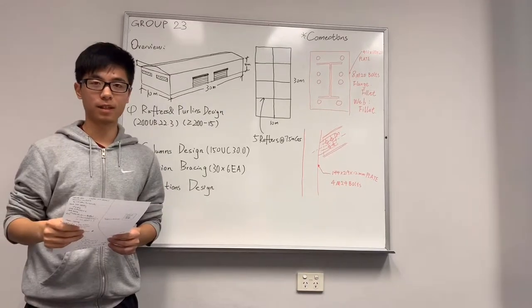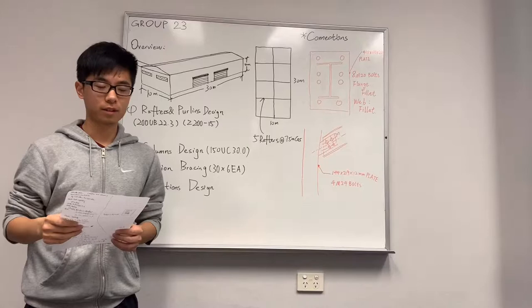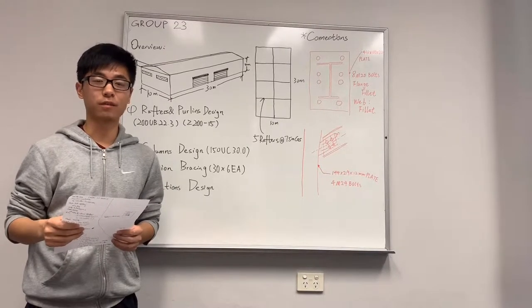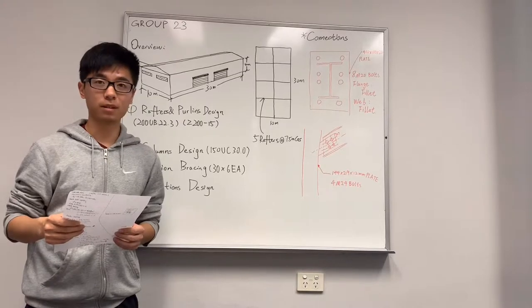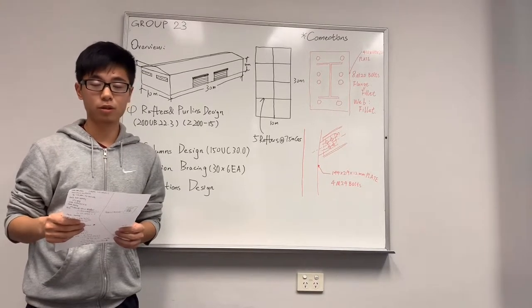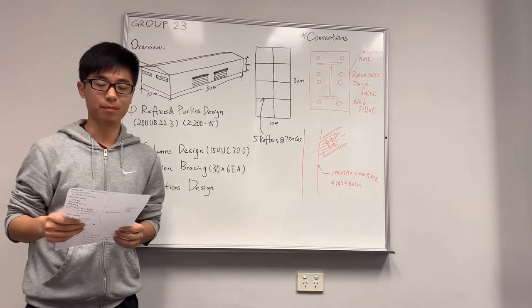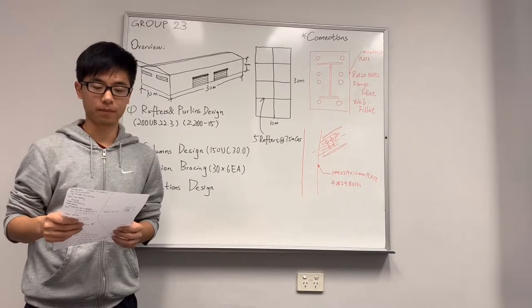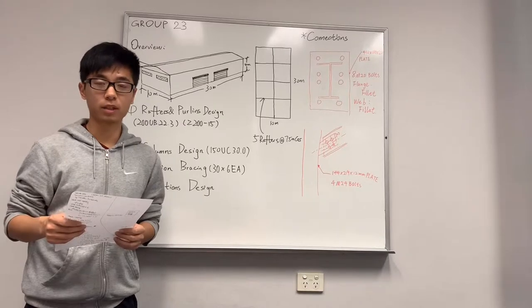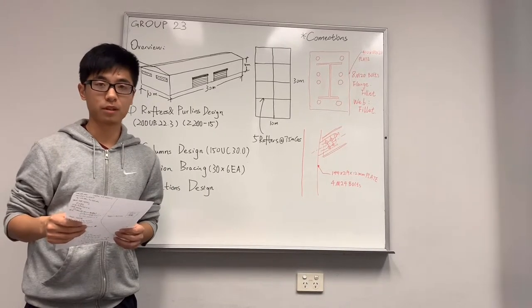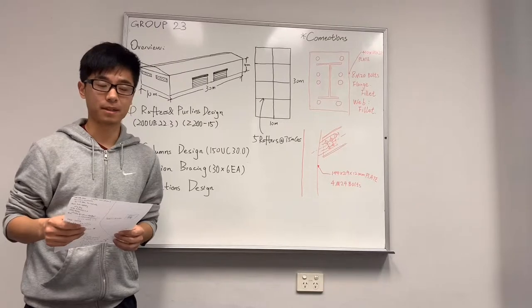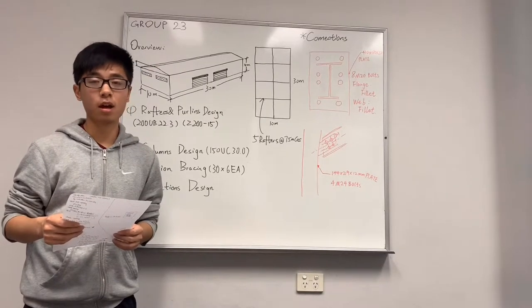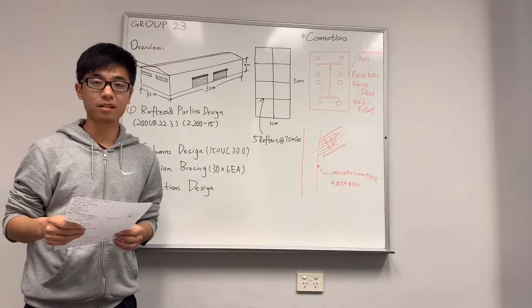I am going to talk about purlin and rafter selection. Our first priority is safety so we have been working on it to make sure that the section is strong enough to carry the load. For the purlin, the span is 7.5 meters so we choose from the smallest member to make it most economical which is Z15015. But after we calculate the dead load and live load, the most critical pressure is beyond its capacity. So we check the capacity of a stronger member which is Z215 and it turns out to be okay.